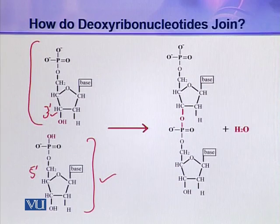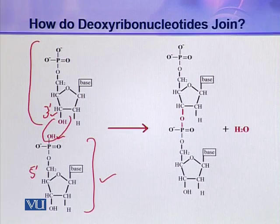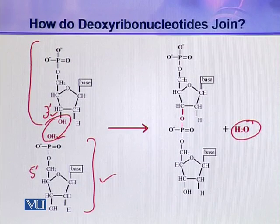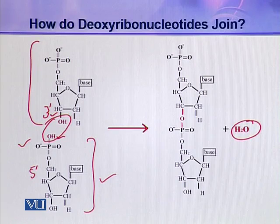Similarly, another hydroxyl group is present on this phosphoric acid. These two hydroxyl groups combine together, a water molecule is eliminated, and an ester linkage is established. This is an ester linkage because this is an organic acid and this is an alcoholic group — when an organic acid and an alcoholic group react, they form an ester linkage.